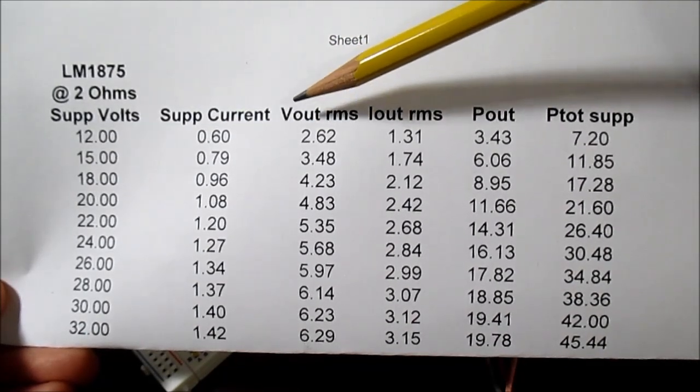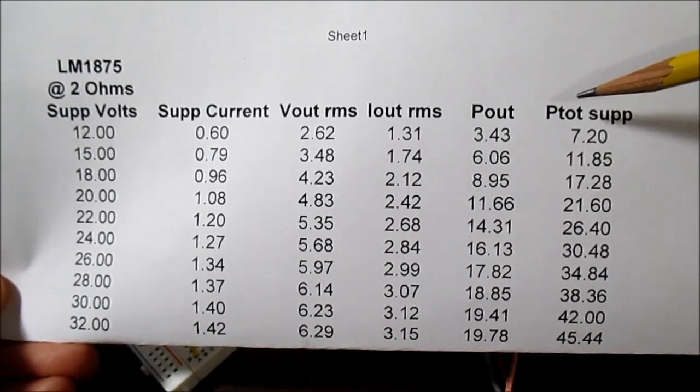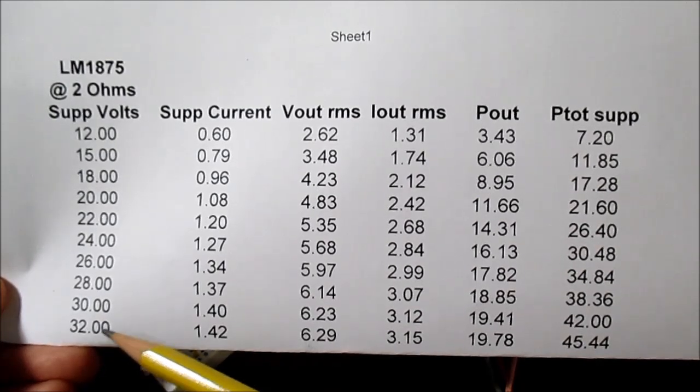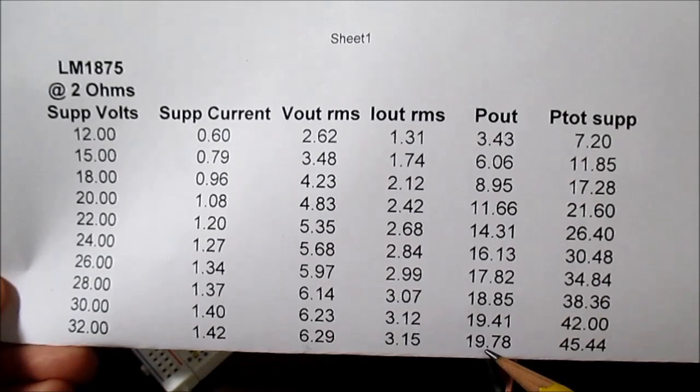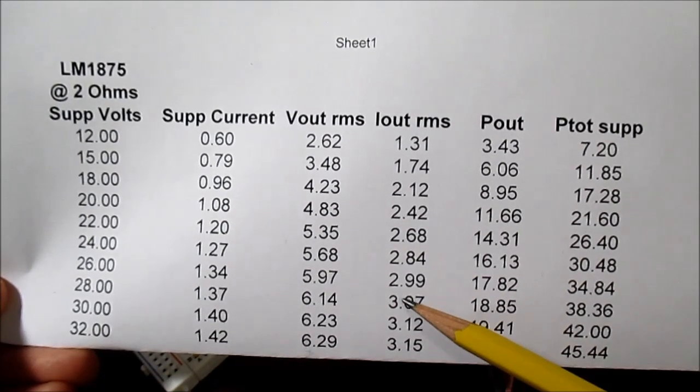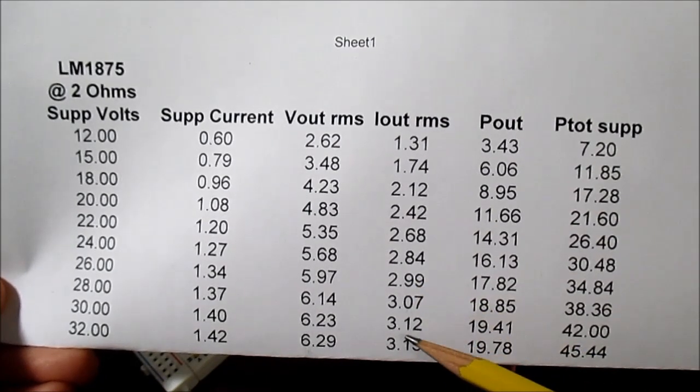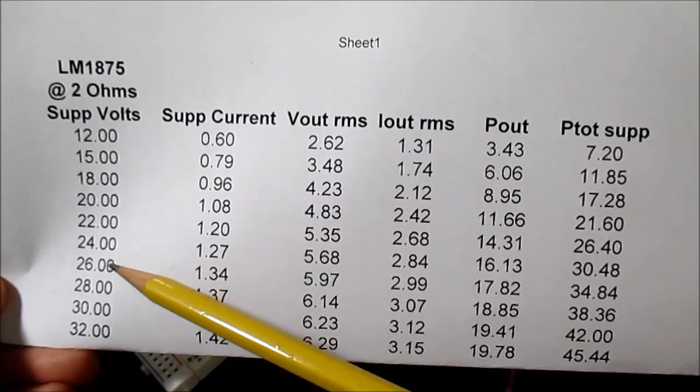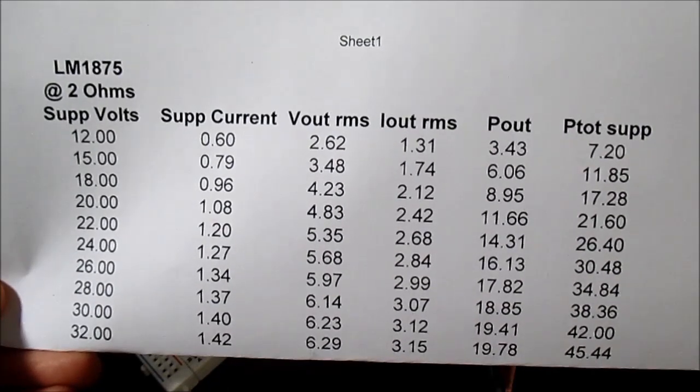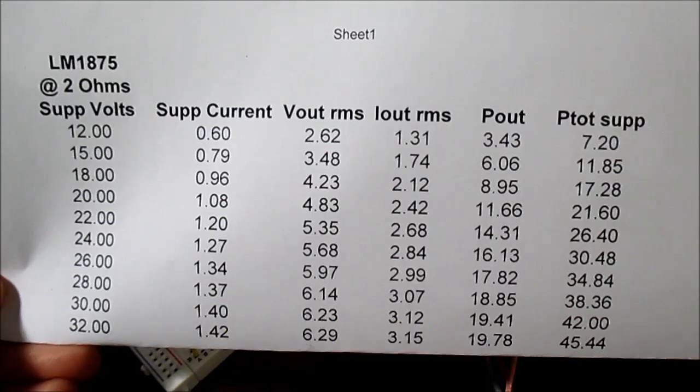Supply current, RMS output voltage, RMS output current. This is the power output. This is the total power supplied from our power supply to the amp board. Here at plus minus 16 volts, just shy of 20 watts. So that's pretty good for 2 ohm loads. Now the chip, you can see here, you hit around 3 amps and it doesn't change much as we raise the voltage. So I know we're getting to that current limit. You have to remember that loudspeakers represent a reactive load to the amplifier, and you should give it a little bit of headroom depending on your speaker.